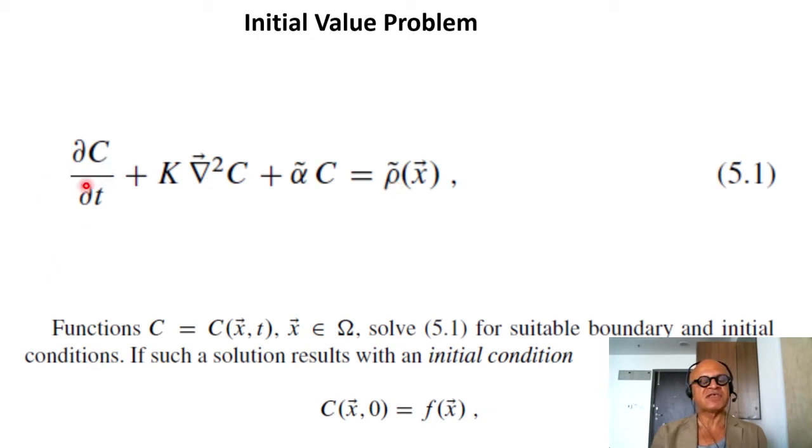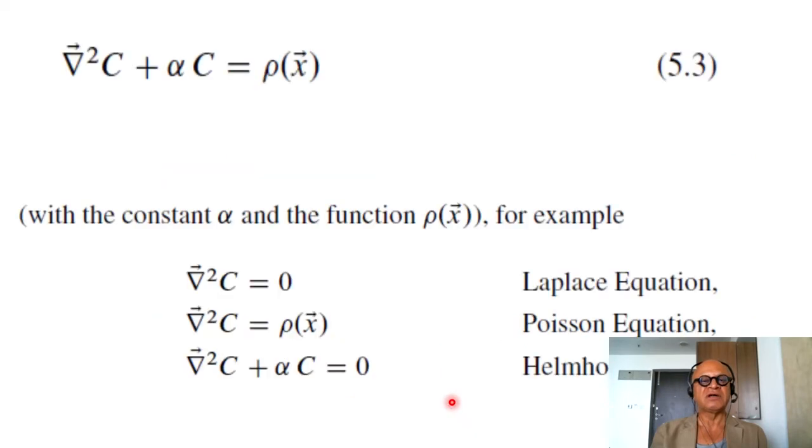So if it has a time derivative, then you need an initial condition for integrating forward, and if it has spatial derivatives, then you have to prescribe the boundary conditions over the domain of integration as well. If such a solution results with an initial condition cx0 at time t0, given by some function of space, so at time 0 you may have a distribution of whether it's temperature, humidity, electrical charge, whatever you are solving, mass, then you need that initial function.